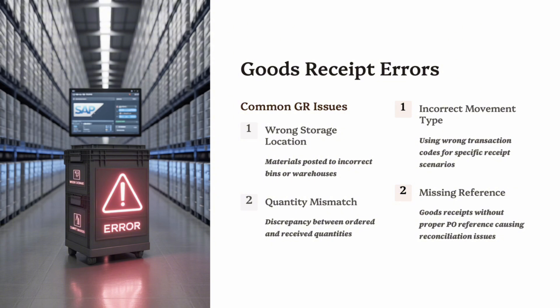The most frequent GR problems include: Wrong Storage Location — materials posted to the wrong location can cause stock discrepancies and make items appear missing. Quantity Mismatches — if the received quantity doesn't match the PO, SAP blocks the invoice later. Incorrect Movement Type — choosing the wrong movement type, such as 101 versus others, can post goods incorrectly and impact financial postings. Unposted GR — sometimes the goods arrive but the GR isn't posted, which blocks the invoice verification step in MIRO.